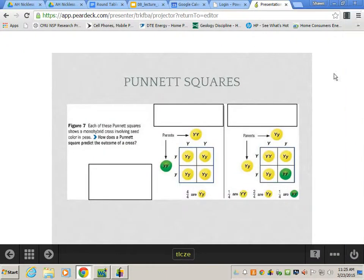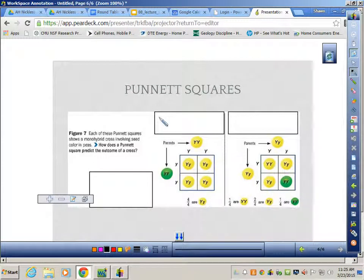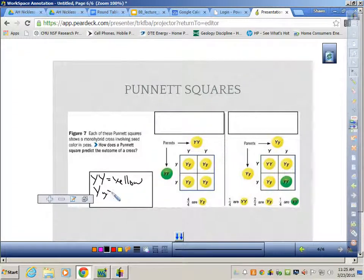Over here we have a few of Mendel's little deeds that he did. In your notes, you guys have them filled in. If I look here, we know that big Y, big Y is going to be yellow. And we know that big Y, little y, is also going to be yellow, whereas little, little will be green. This is what is known as Mendel's parental generation up here. And when you cross those two parents, the big Y, big Y cross with big Y, little y, you end up with your F1 generation.